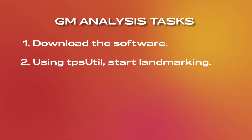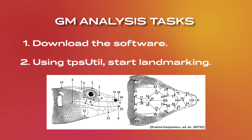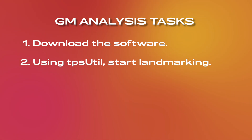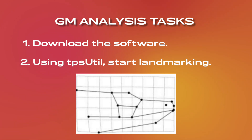Step two: using TPSutil, start landmarking. Landmarking involves plotting points to form the shape for further analysis. You'll need a reference for the landmarks, usually found in other journals, as these points are typically in key parts of the organism. Once your points are determined, you just click — remembering that the order of points is important. Then, you can create a links file, which connects all the dots based on the order you placed them to form the shape.